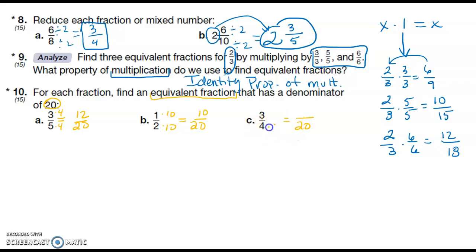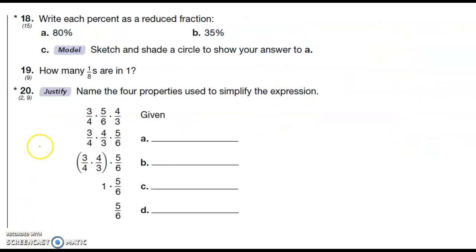Number eighteen: Write each percent as a reduced fraction. So eighty percent is eighty per hundred. Now cross out my zeros and then I'm going to divide by two. So eight divided by two is four, ten divided by two is five, and that's as far as that's going to go.